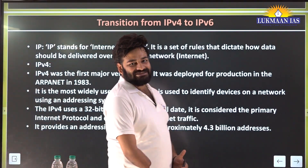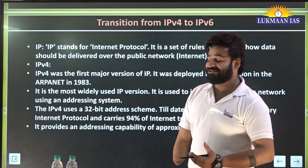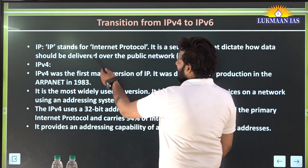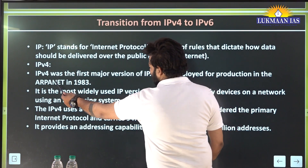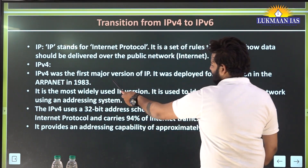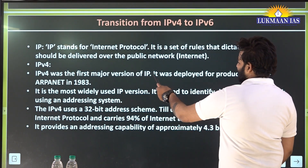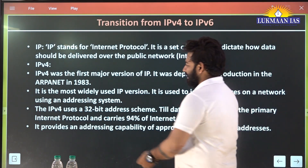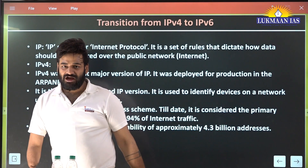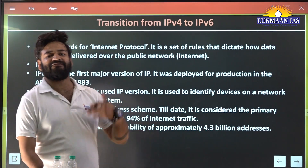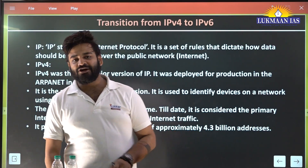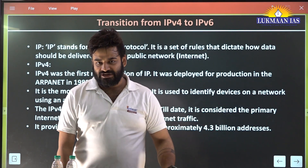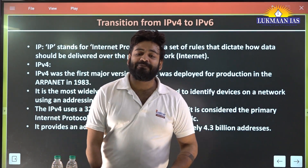We shifted from IPv4 to IPv6 because we needed excess data and storage facility. IPv4 was the first major version of IP and was deployed for production in ARPANET in 1983. ARPANET is considered the father of the internet — the first version of the internet.